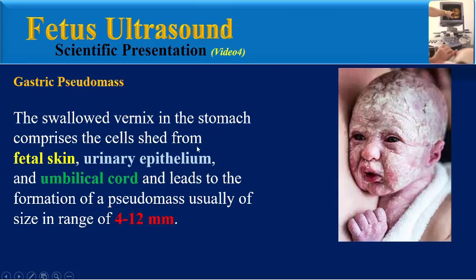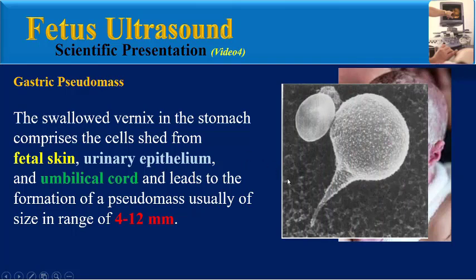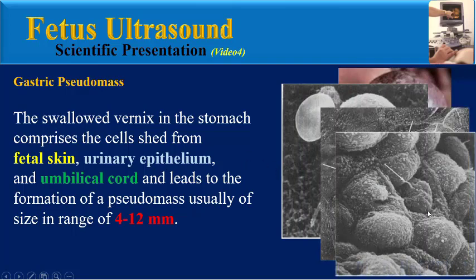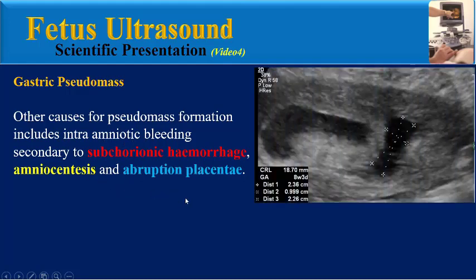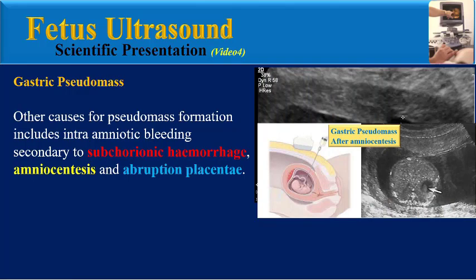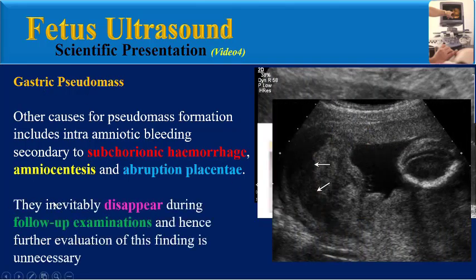The swallowed vernix in the stomach comprises cells shed from fetal skin, urinary epithelium, and umbilical cord, and leads to the formation of a pseudomass usually of size in the range of 4 to 12 mm. Other causes for pseudomass formation include intra-amniotic bleeding secondary to subchorionic hemorrhage, amniocentesis, and abruptio placenta. These inevitably disappear during follow-up examinations, and hence further evaluation of this finding is unnecessary.